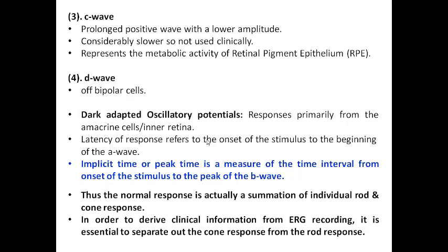Regarding dark-adapted oscillatory potentials, the response is primarily from the amacrine cells or inner retina. Latency of response refers to the time from onset of the stimulus to the beginning of the A wave. Implicit time or peak time is the time interval from onset of the stimulus to the peak of the B wave — how much time is taken between the start of the ERG A wave response to the maximum of the B wave. The normal response is a summation of individual rod and cone responses. To derive clinical information from ERG recording, it is essential to separate the cone response from the rod response.